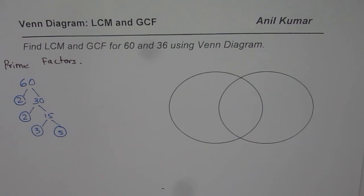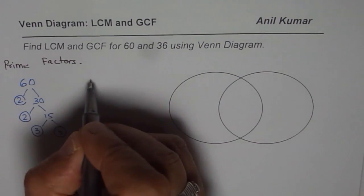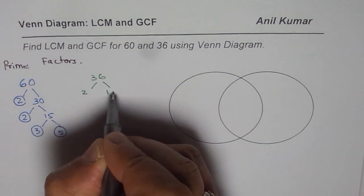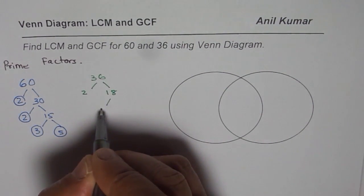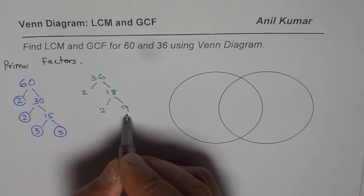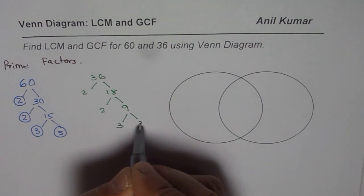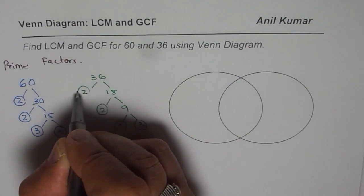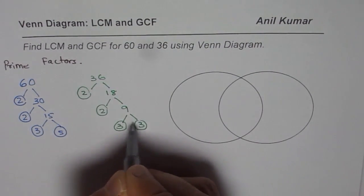And now let us write down the factors for 36. For 36, 2 times 18, 18 is 2 times 9 and 9 is 3 times 3. So now we cannot further factor. So these are all the prime numbers which when multiplied together gives you 36.